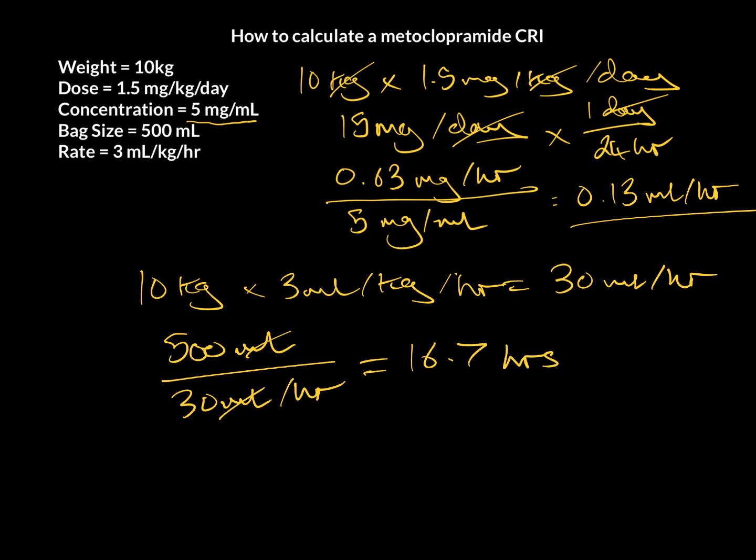So, if we know that we're giving 0.13 mLs per hour of metoclopramide, and we know that this bag lasts for 16.7 hours, we need to give 16.7 hours worth of metoclopramide. So, if we do 16.7 times 0.13, that's going to give us 2.1 mLs of metoclopramide.